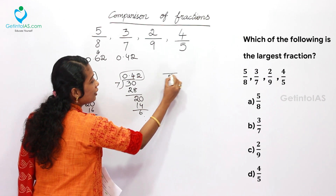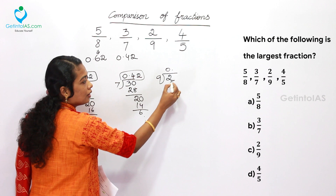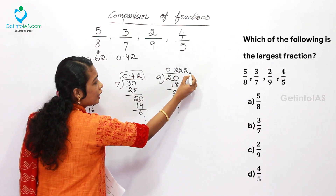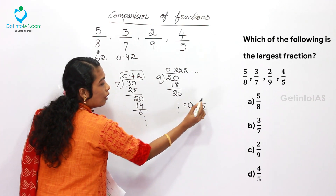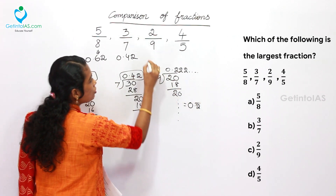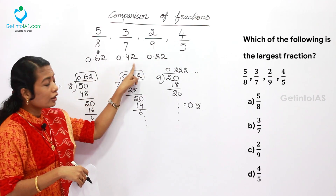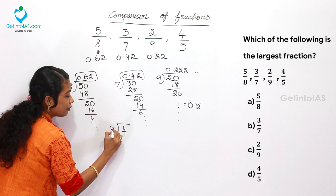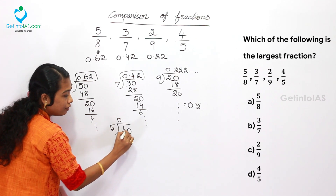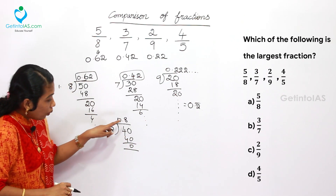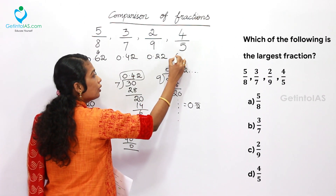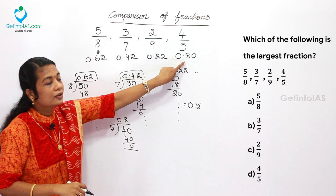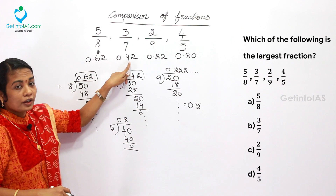For 2/9: divide 2 by 9. 0 times, and after including 0, 2 times 9 is 18. The 20 series keeps repeating, so 2, 2, 2 like that — it is 0.2 recurring (or 0.22). This is a recurring number. For 4/5: 4 divided by 5 gives 0.8. To compare evenly with 2 digits, that is 0.80. So we have 0.62, 0.42, 0.22, and 0.80.